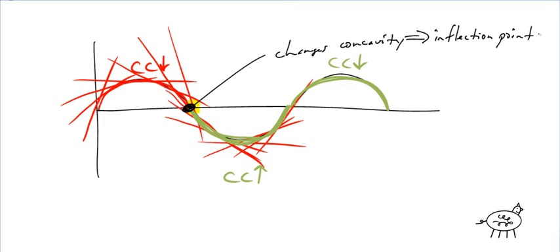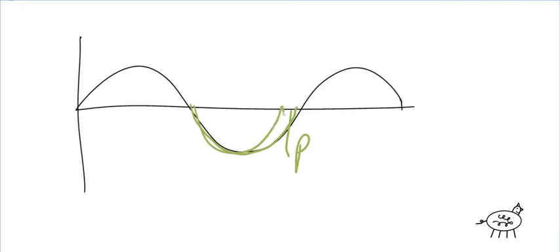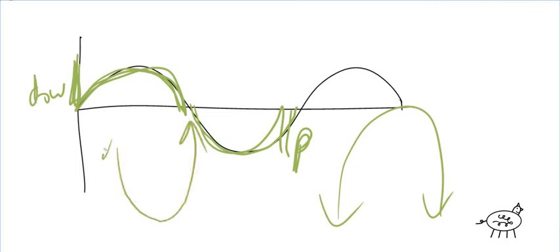An inflection point is where it's changing from concave up to concave down or vice versa. A good way to remember concave up versus concave down: concave up looks like a U — it's pointing up. Concave down looks like a D going down. It's pointing down like this; that's concave down. Going up is concave up.